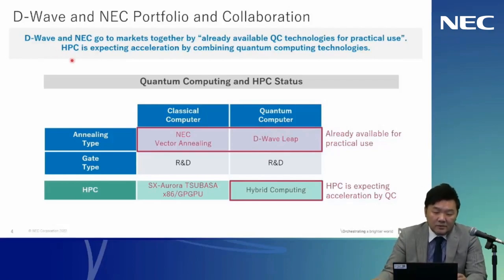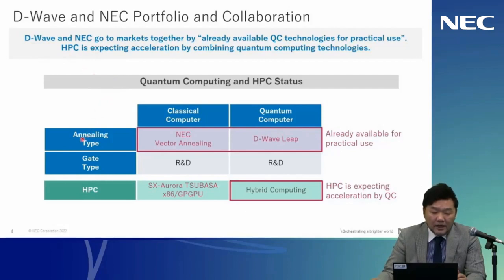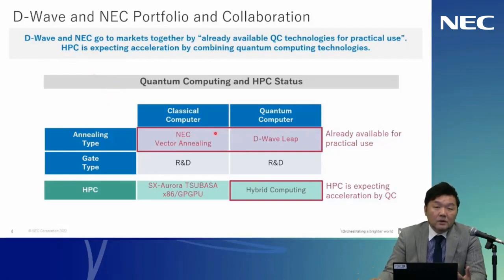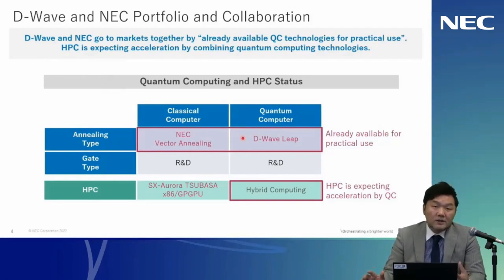HPC is expecting acceleration by combining quantum computing technologies with high-performance computing. This figure shows the quantum computing and HPC status. For annealing on classical computer, NEC has the vector annealer. For annealing on quantum computer, this is a real quantum computer and D-Wave is providing LEAP. From NEC's point of view, these two products are already available for practical use, which is why NEC is focusing on providing annealers on classical computers and their own quantum computer to customers.